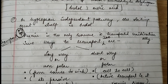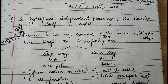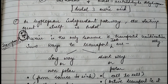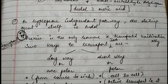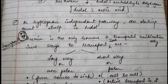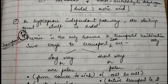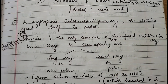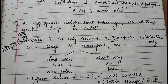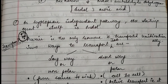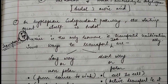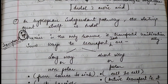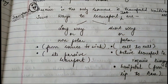In the tryptophan-independent pathway, the starting material is not tryptophan — it is indole. So whether tryptophan is present or not makes no difference; IAA will still be formed. This is the key distinction: in the tryptophan-dependent pathway, the whole pathway depends on tryptophan as a precursor, but in the tryptophan-independent pathway, the starting material is indole.